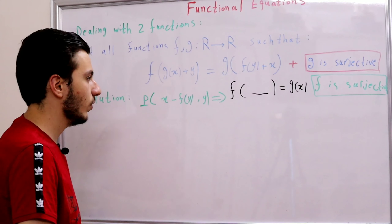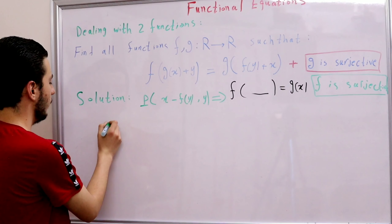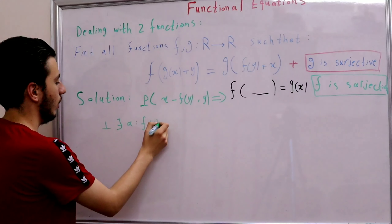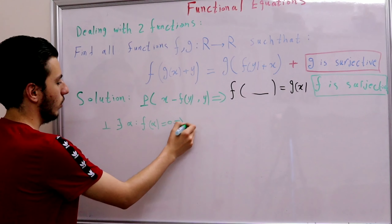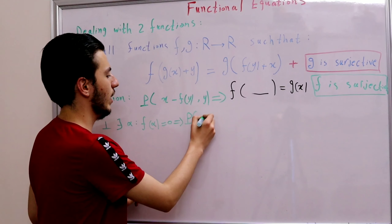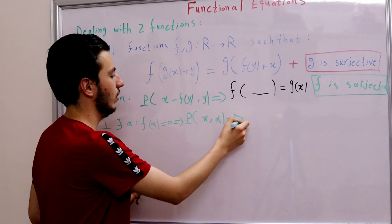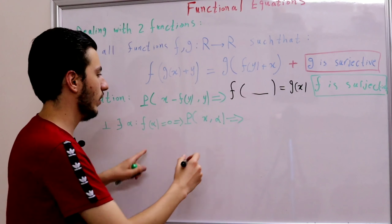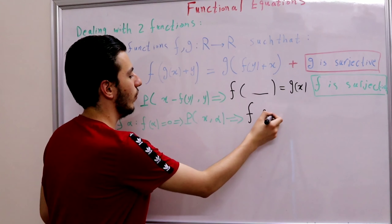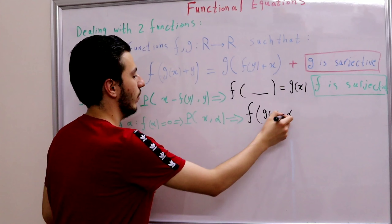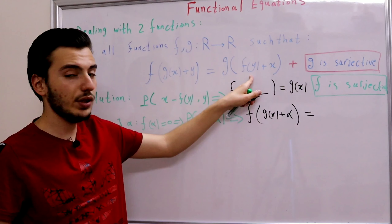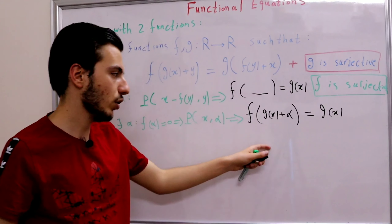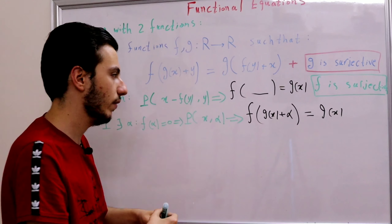Let's write this down carefully. From surjectivity, there exists α such that f(α) = 0. Substituting y with α in the original equation: the left-hand side becomes f(g(x) + α), and the right-hand side becomes g(f(α) + x) = g(0 + x) = g(x). So we obtain the simpler equation: f(g(x) + α) = g(x).